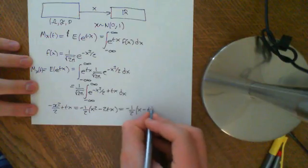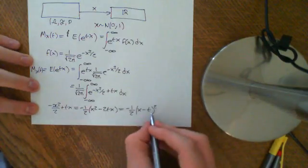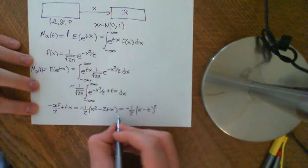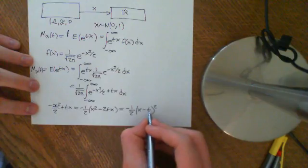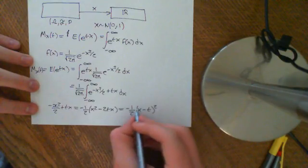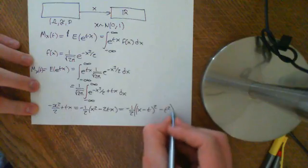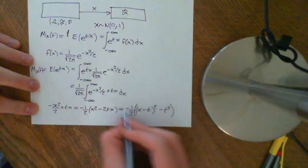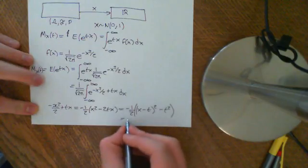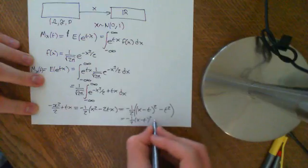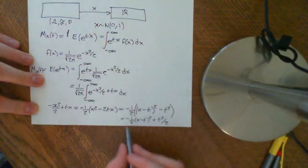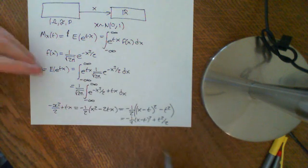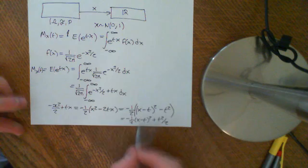Completing the square: we write negative one-half times (x minus t) squared. Expanding gives x squared minus 2tx plus t squared, so we must subtract off t squared inside the bracket. Multiplying through by negative one-half, the exponent becomes negative one-half times (x minus t) squared plus t squared over 2, which is algebraically identical to the original expression.